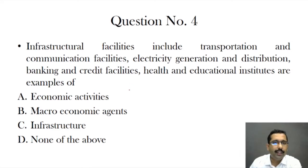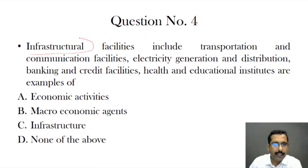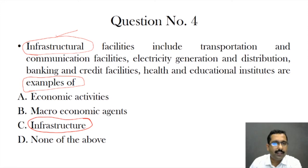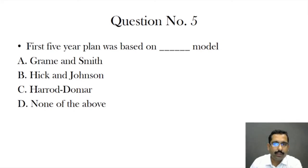Question four: infrastructural facilities include transportation and communication facilities, electricity generation and distribution, banking and credit facilities, and health and educational institutions. These are examples of what? This is actually a flawed question — the word 'infrastructural' is already used in the question itself. If we are attentive, the answer is right there: these are examples of infrastructure facilities of the country. Sometimes the question itself contains the answer.